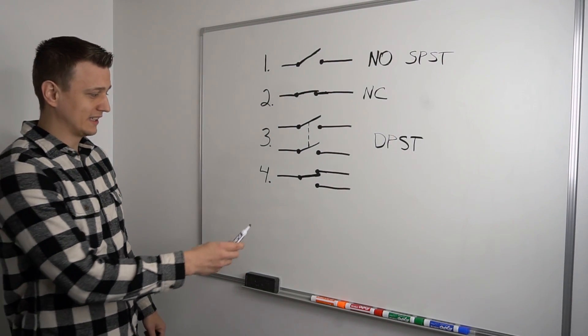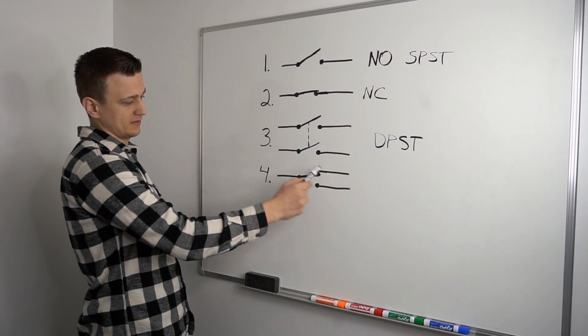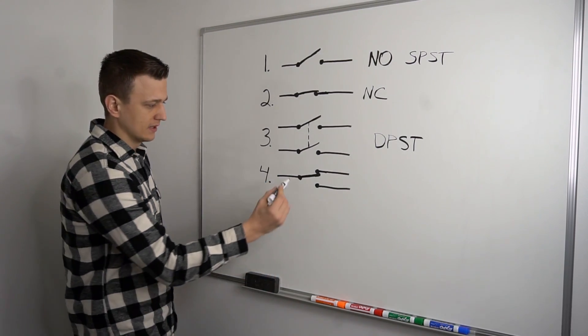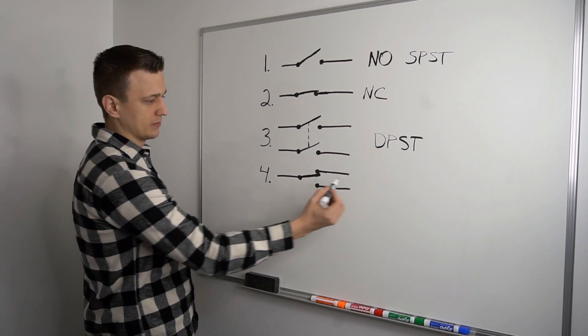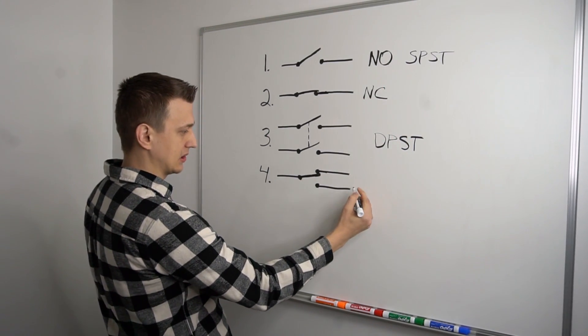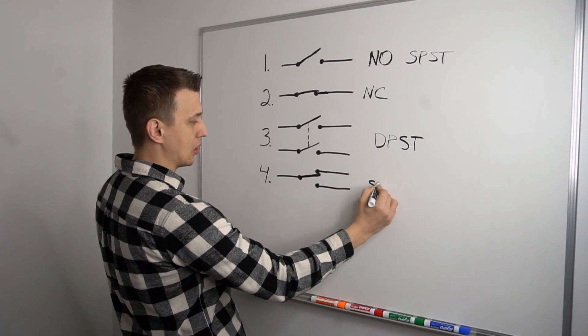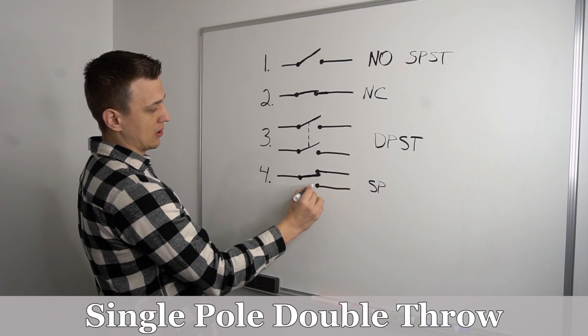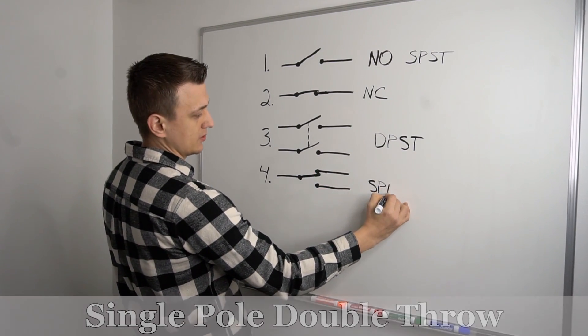And another common switch that you may see is the two-way switch, which is this guy right here. So once again, this one will be, if we're being technical about it, this will be a single pole, single pole double throw. So it can go into two positions.